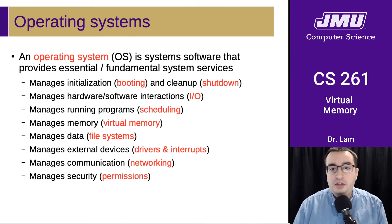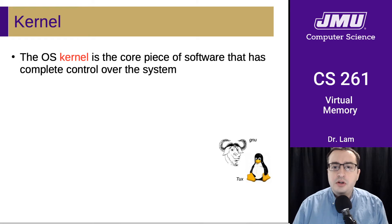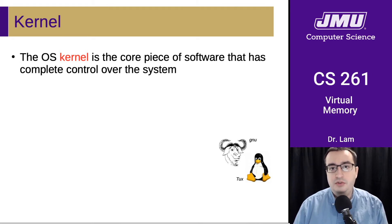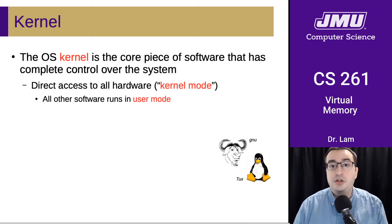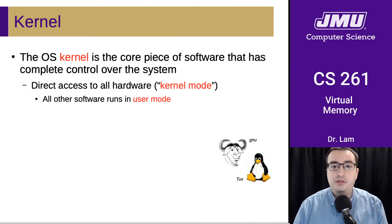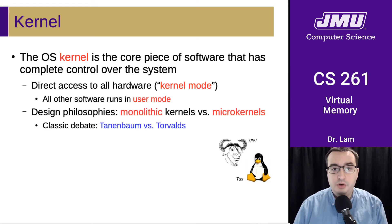The kernel of an operating system is the core piece of software that has complete control over the system. It has direct access to all the hardware. When the CPU is running in this mode, we say that it's running in kernel mode. All of the other software does not run in this mode — it generally runs in another mode called user mode.